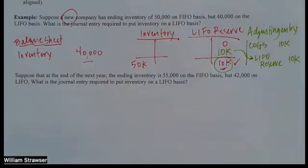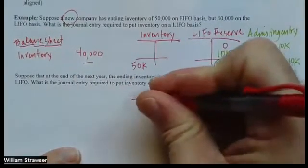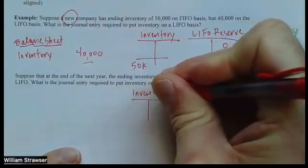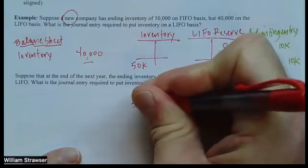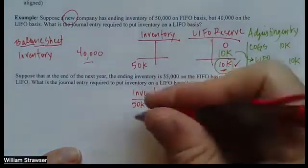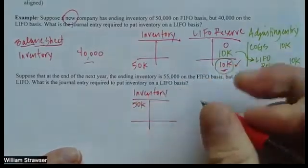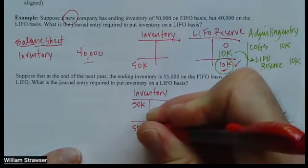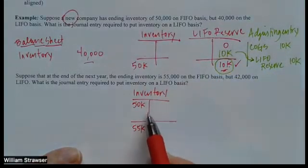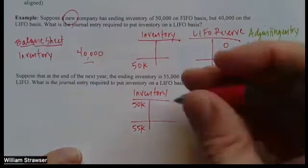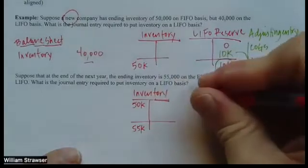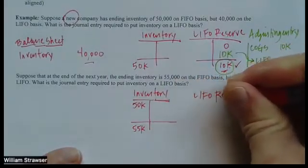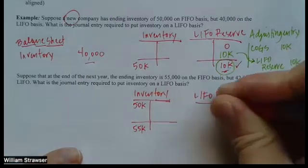Now let's look at what happens at the end of the next year. The ending inventory is $55,000 on a FIFO basis but $42,000 on a LIFO basis. The inventory account begins the year at $50,000 — that's where we ended up the year before — and now we're ending at $55,000. It doesn't really matter what happened during the year in terms of the movement of inventory in and out of the business. The LIFO reserve similarly would start at $10,000 because it is a real account that we don't close.